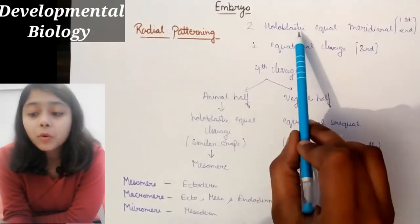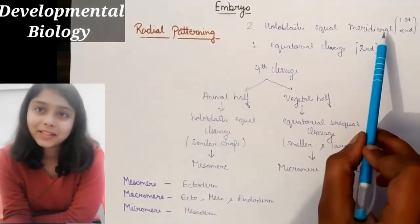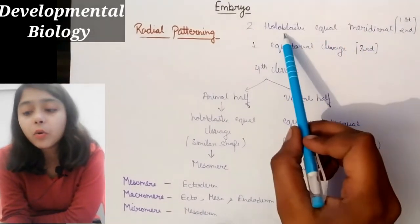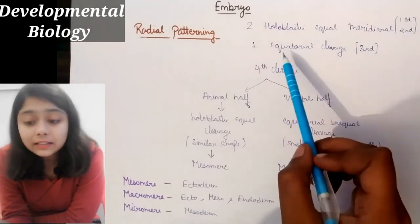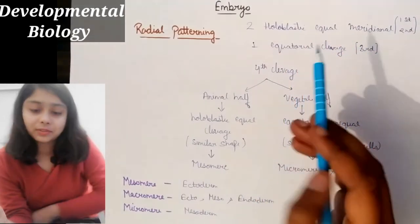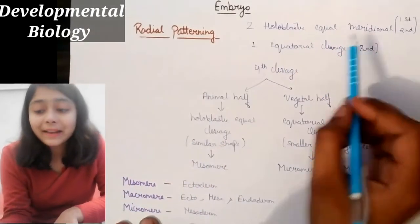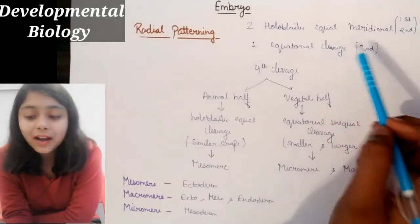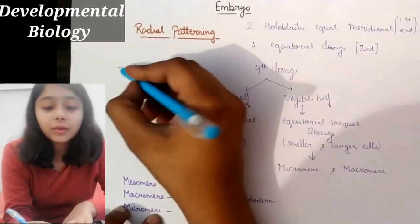In radial patterning: the first cleavage is holoblastic meridional cleavage, the second cleavage is holoblastic meridional cleavage, and the third cleavage is equatorial cleavage. So: first meridional holoblastic, then second meridional, then equatorial.